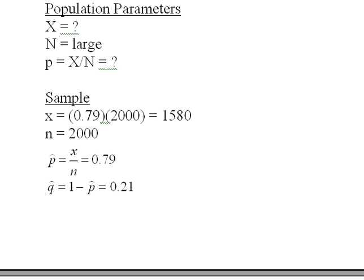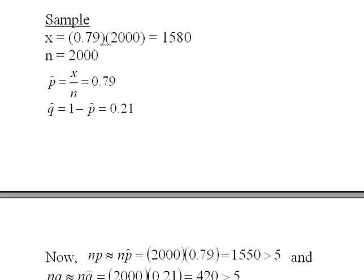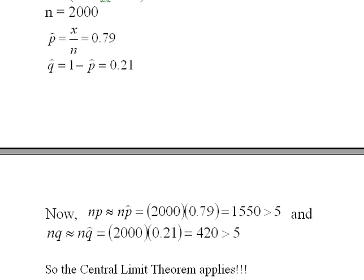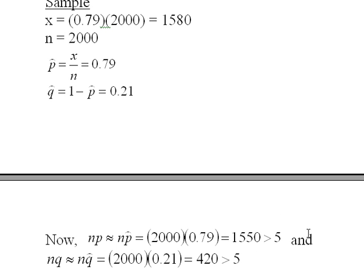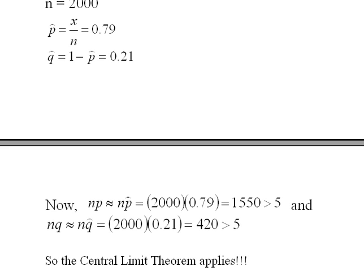Does the central limit theorem apply in this case for this sample? NP is approximately n times p̂, which is 1,580, which is certainly greater than 5. And NQ, which is approximately n times q̂, is 420 — so that's also greater than 5. This is the criteria we need for the central limit theorem to apply, so the central limit theorem applies.